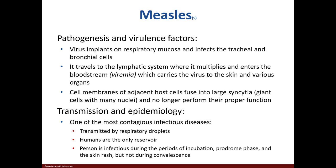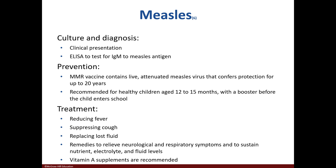The virus attaches to the respiratory mucosa and then travels to the lymphatic system, followed by the bloodstream. The mode of transmission is through droplet contact, and a person is contagious prior to exhibiting the rash or other symptoms. It can be diagnosed in the clinical setting or via an ELISA. Measles can be prevented with the MMR vaccine and treated via supportive therapy.